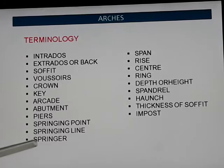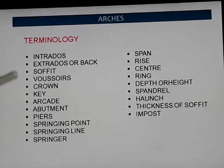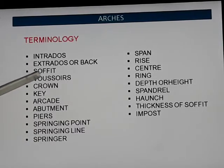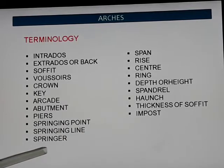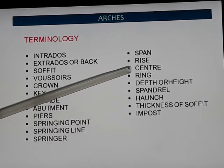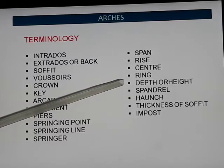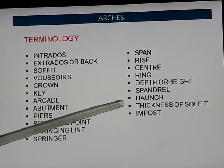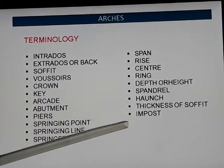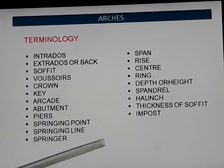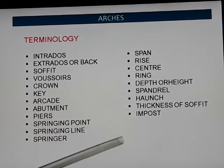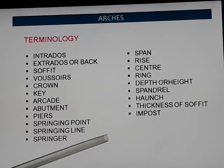Here is the list of terms: intrados, extrados, soffit, voussoirs, crown, keystone, arcade, abutment, pier, springing point, springing line, springer, span, rise, center, ring, depth, spandrel, haunch, thickness, and impost. These are the terms which we regularly use in studying an arch.